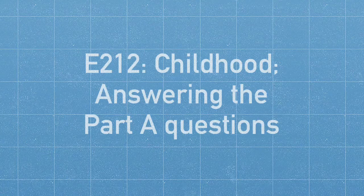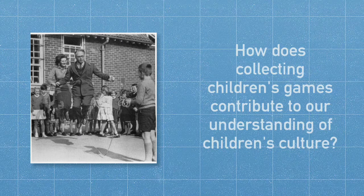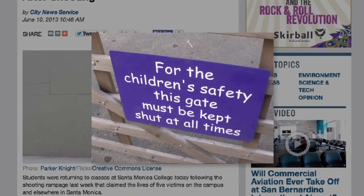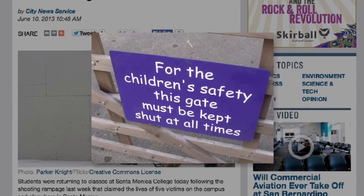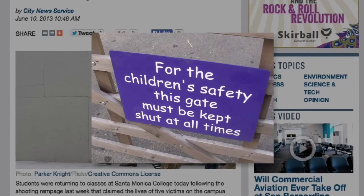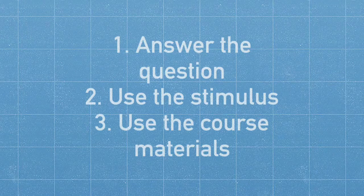This is a guide to answering the Part A questions in the Open University course E212, Childhood. E212 Part A's always have a stimulus and a question. The stimulus could be an extract of text, a photograph, or something which has both text and images, such as a print advertisement or a newspaper article.